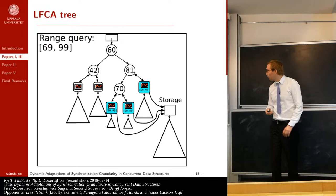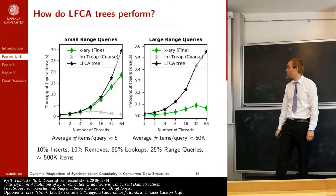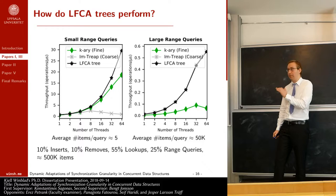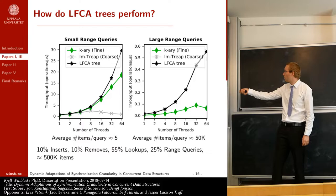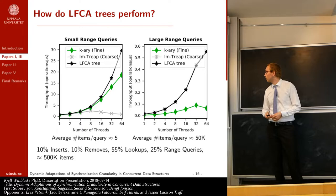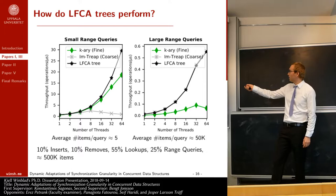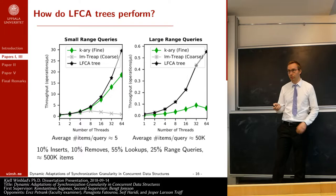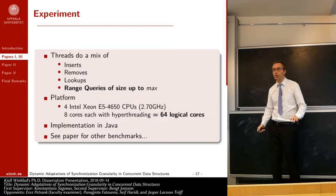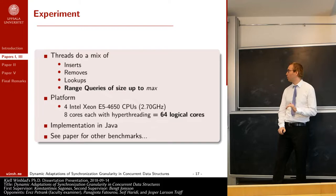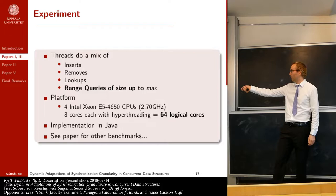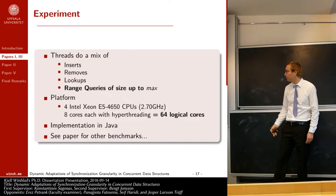How does the LFCA tree actually perform? Looking at the same benchmark scenarios shown earlier, the LFCA tree is the black line. With small range queries, it is even better than the fine-grained lock-free k-ary search tree. With large range queries, it is almost identical to the imp tree — the coarse-grained example. In this experiment, threads perform a mix of inserts, removes, lookups, and range query operations, with range query sizes up to a certain maximum value.